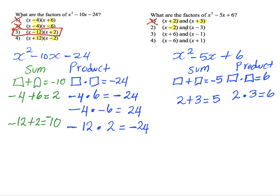Let's try negative 2 and negative 3. Negative 2 times negative 3 — two negatives multiplied give a positive — so we get positive 6. Now let's add: negative 2 plus negative 3. When the signs are the same, we add, giving us 5, and we keep the sign, so the answer is negative 5. We get the sum of negative 5. Therefore, our answer is number 2.